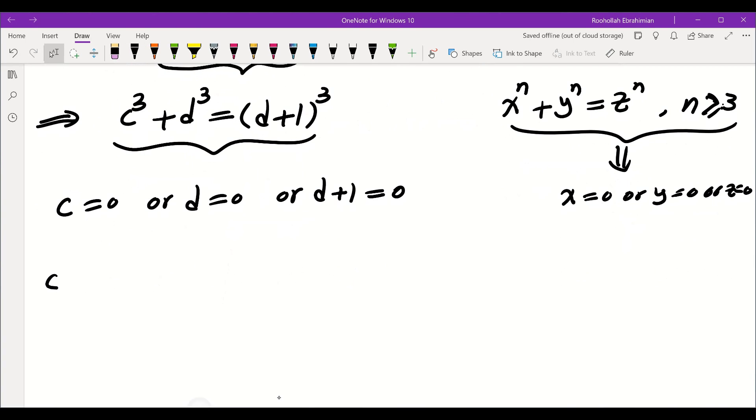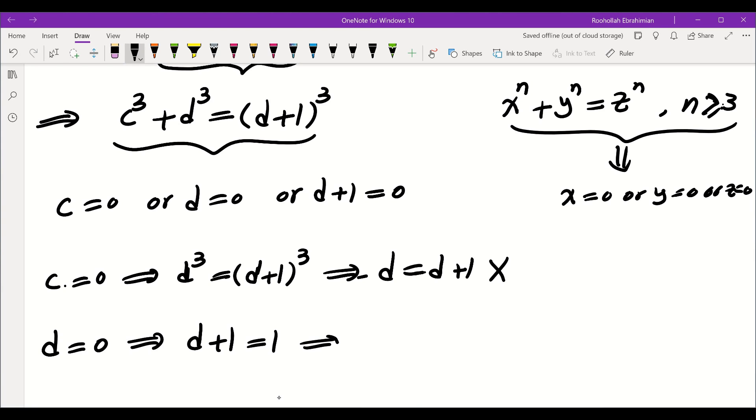So let's see what we get. If c is 0, that gives me d cubed is equal to d plus 1 cubed. That's of course not going to make any sense because that gives me d equals d plus 1, which doesn't work. If d is 0, then that means d plus 1 is 1, which means c cubed is equal to 1, which means c is 1.